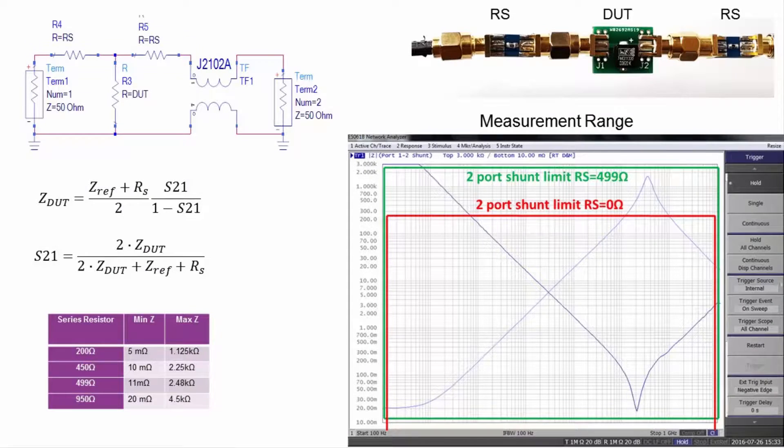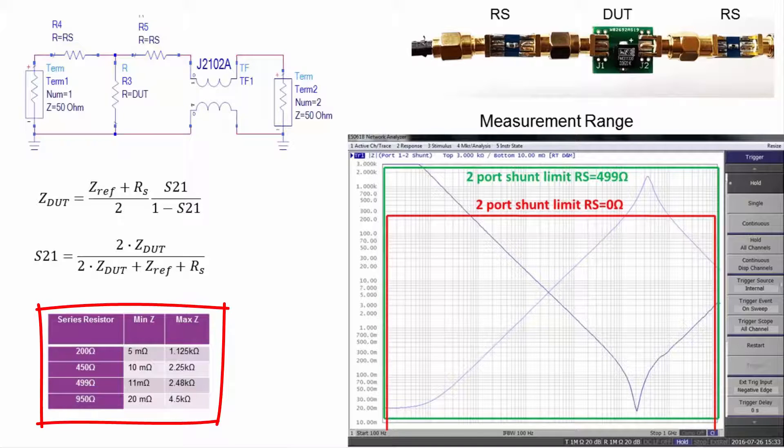Adding a series resistor at each port increases the apparent port impedance, providing a method of scaling the measurement range. The scaled range is shown here for some common value series resistors.